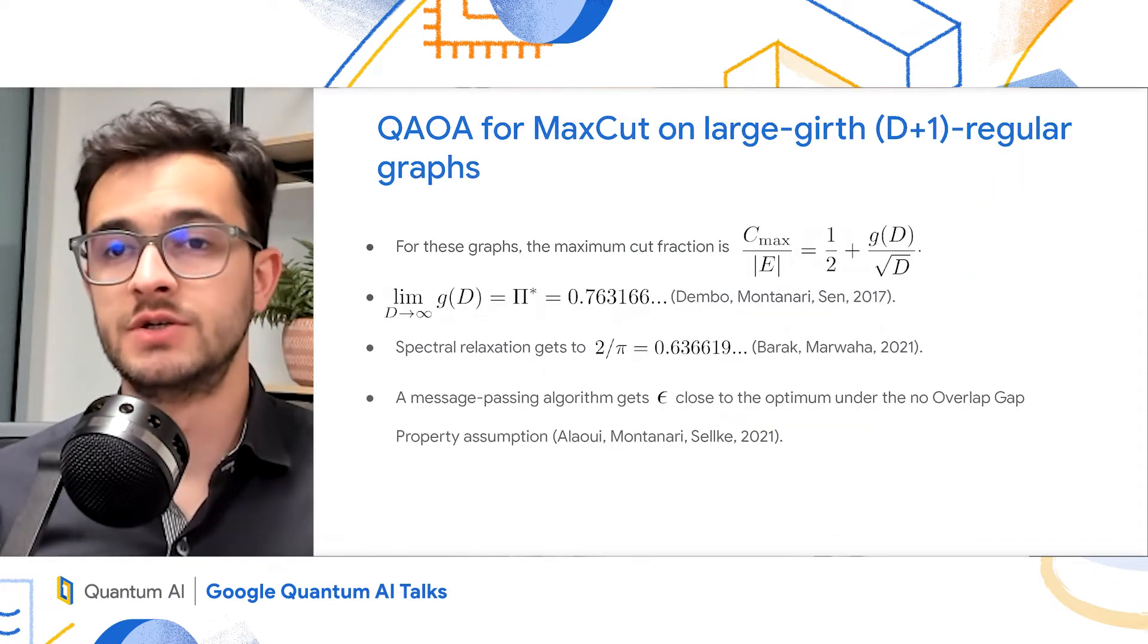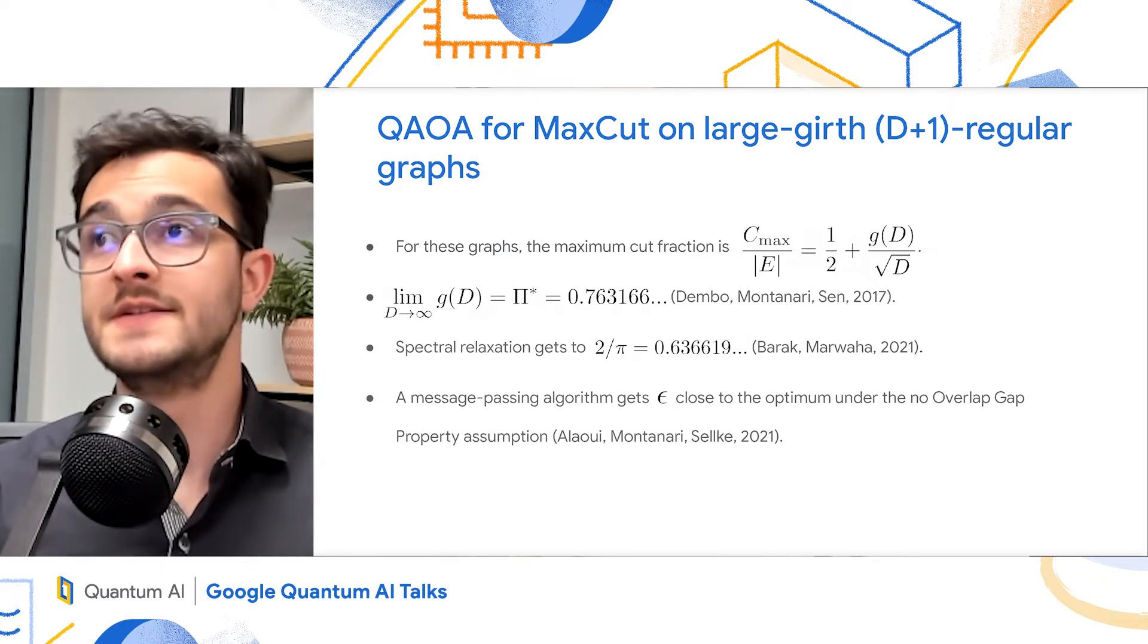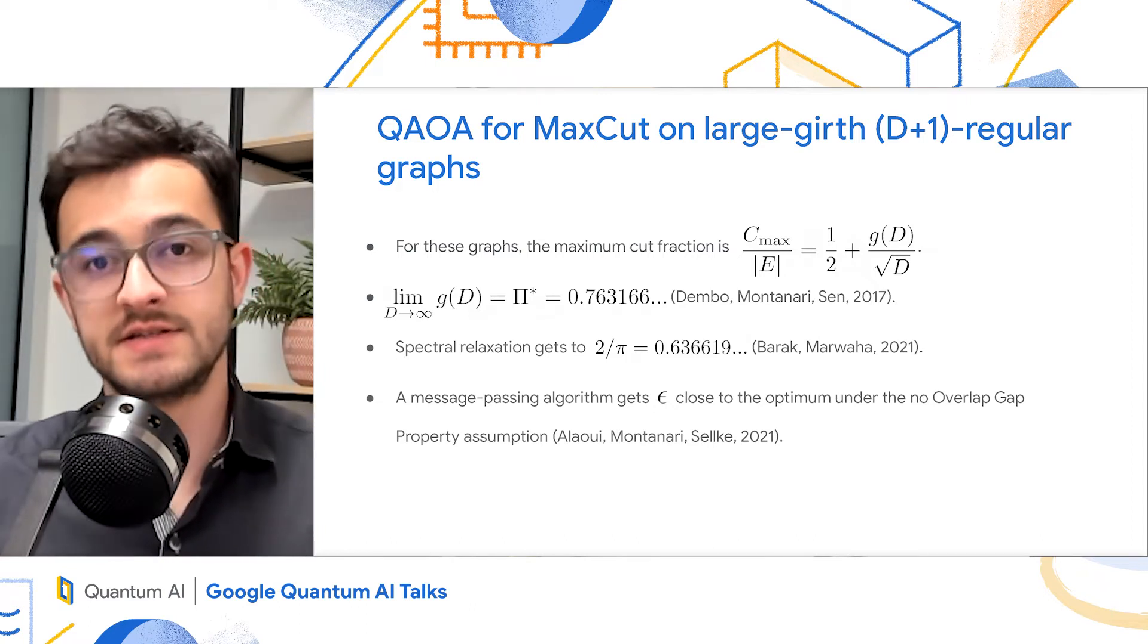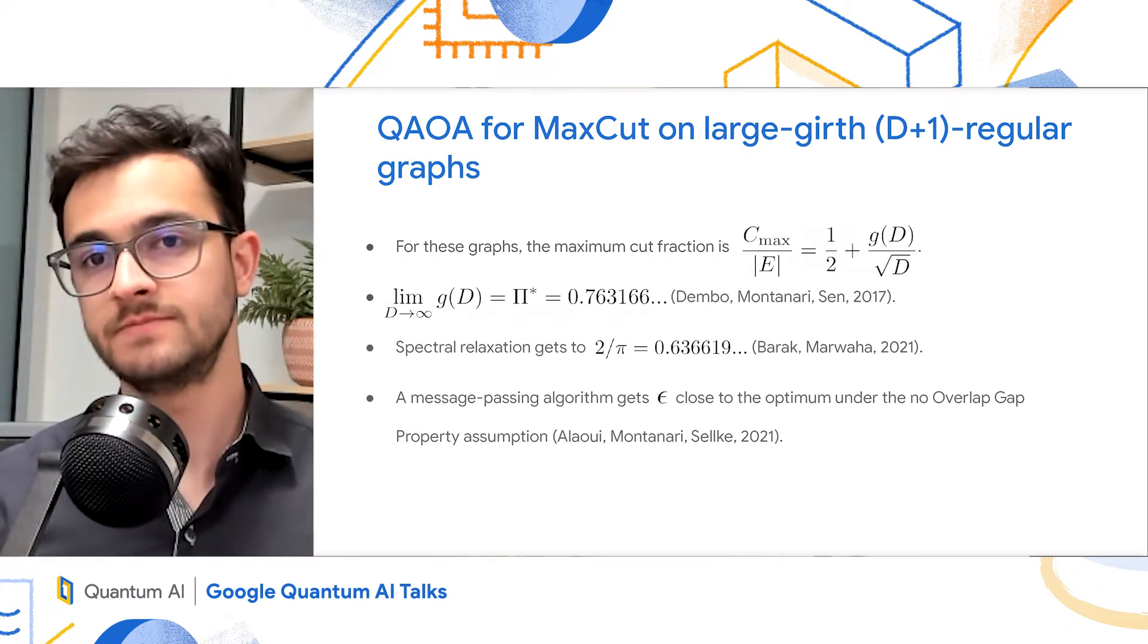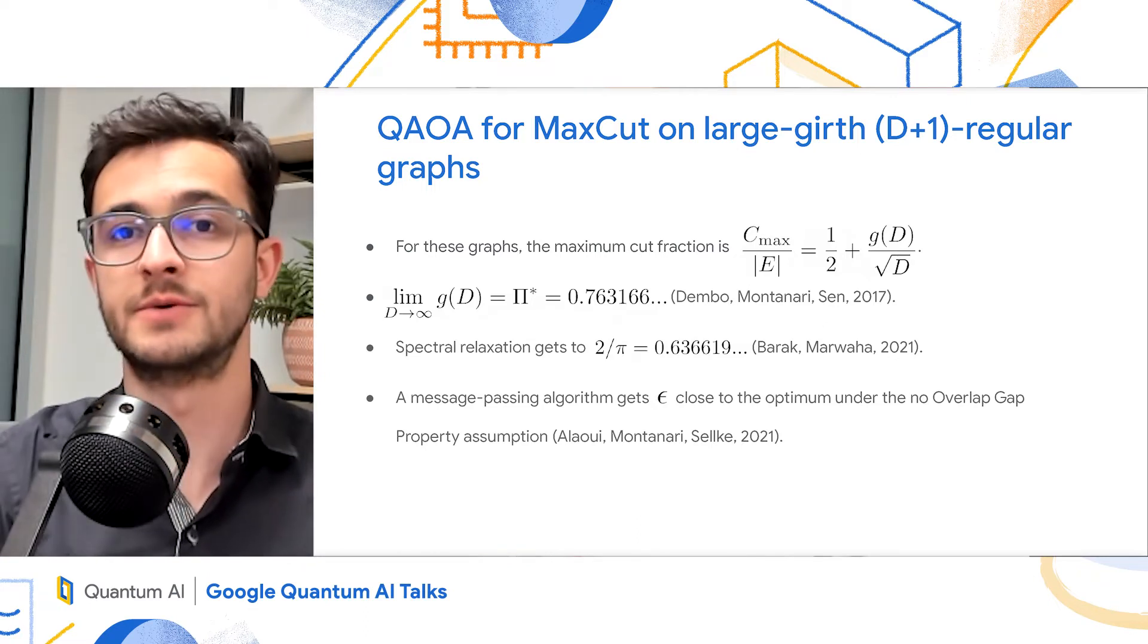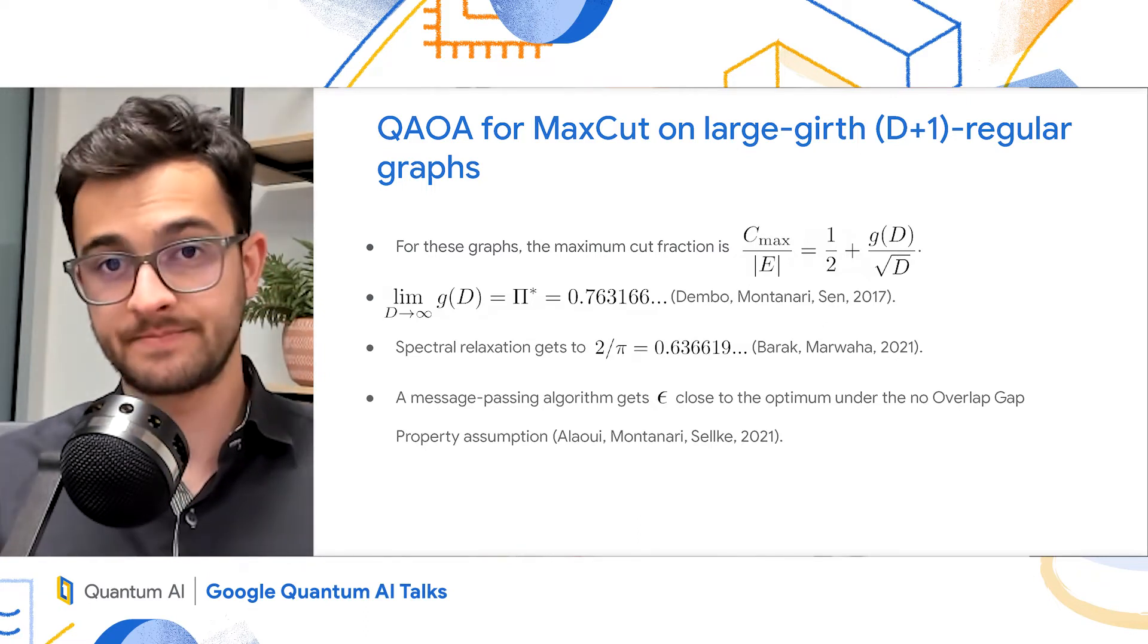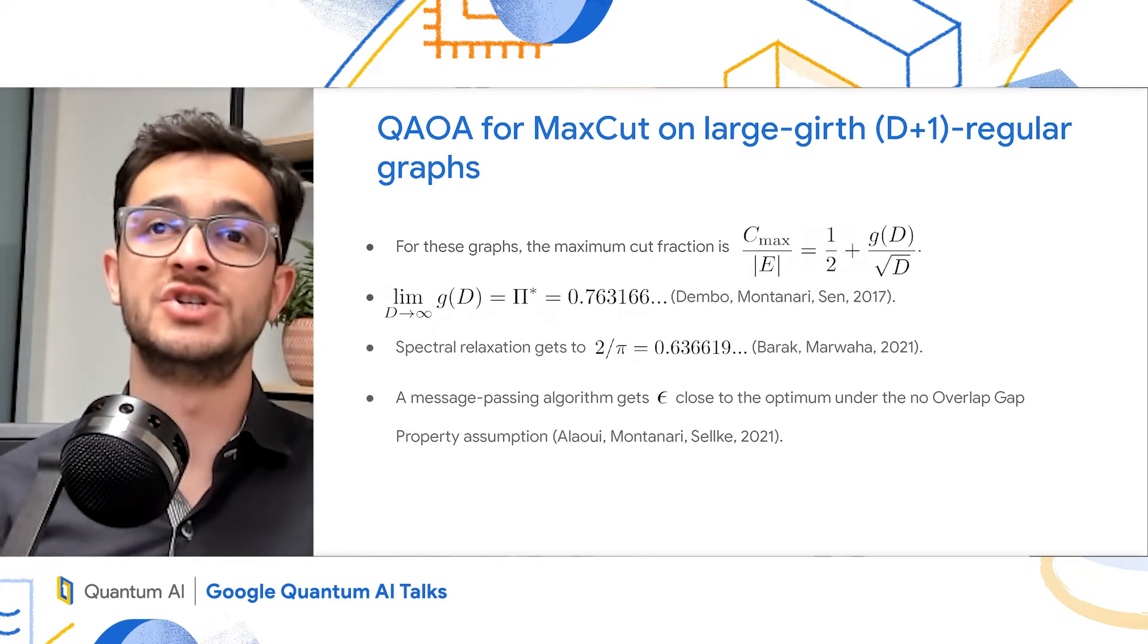So we will restrict our attention to graphs that are large girth, meaning they don't have small cycles, and d plus one regular, meaning that every vertex has d plus one neighbors. So for these graphs, it's known that the best cut fraction, that is the best cut you can get divided by the total number of edges, is given by half, plus something of order one over root d. So we will call this numerator g. It's known that as d goes to infinity, this g goes to the Parisi value.